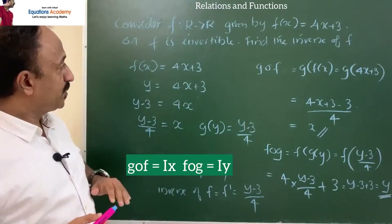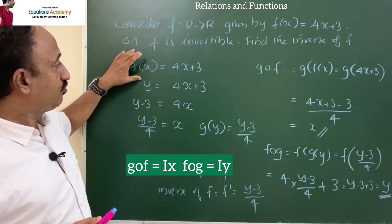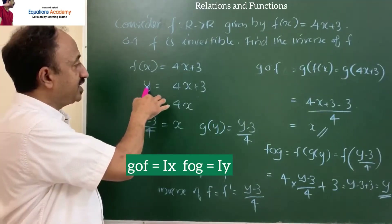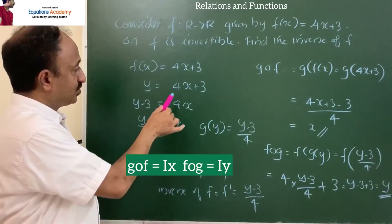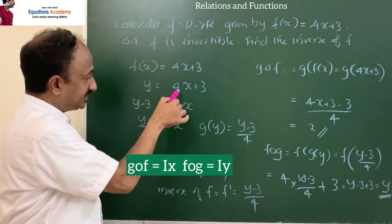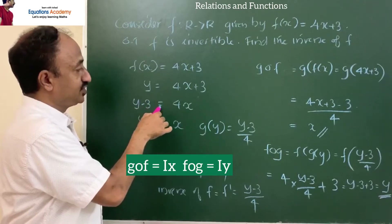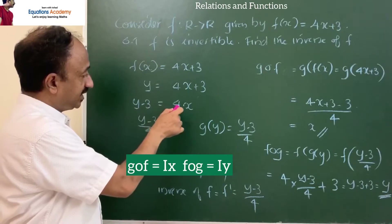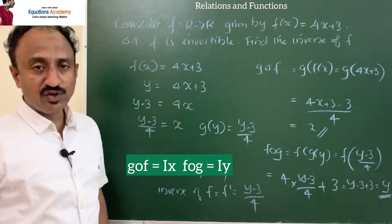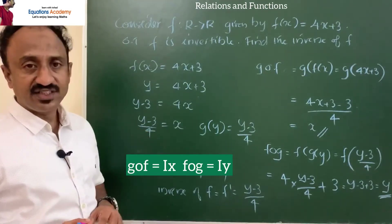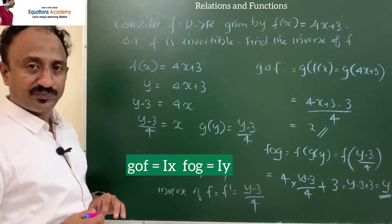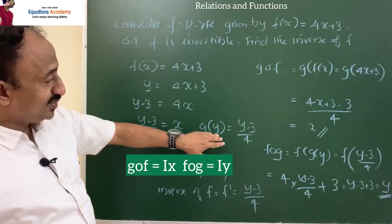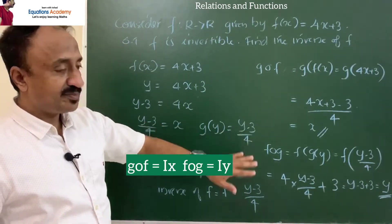Given f(x) = 4x + 3, let y = 4x + 3. Then y − 3 = 4x, so x = (y − 3)/4. Therefore g(y) = (y − 3)/4.